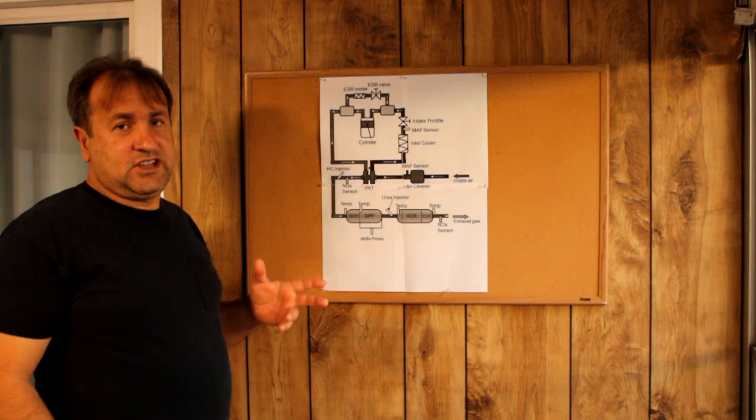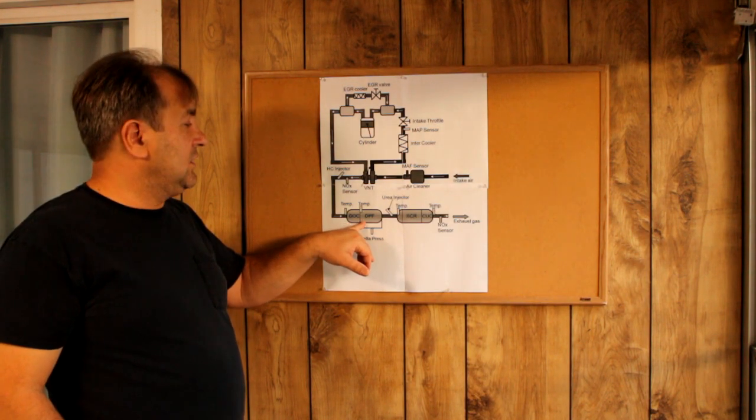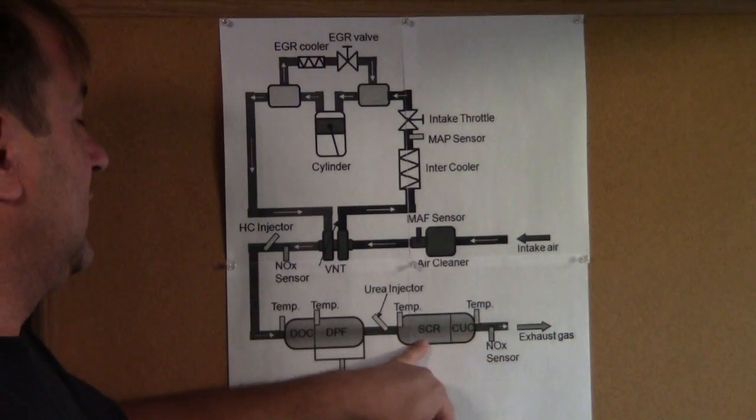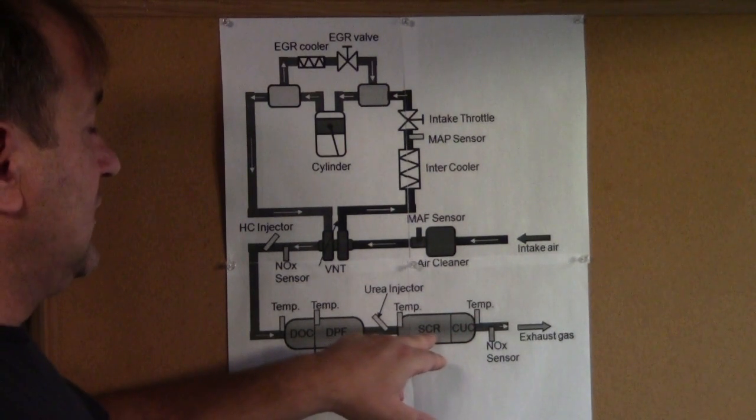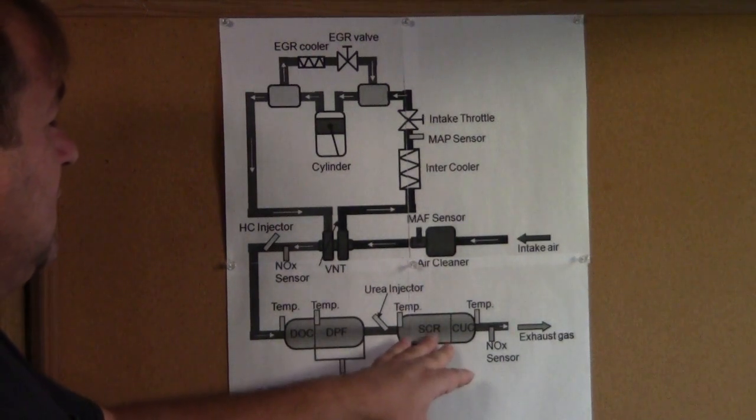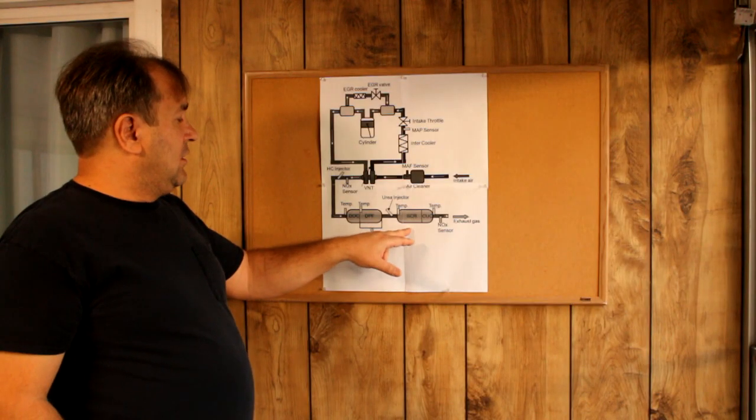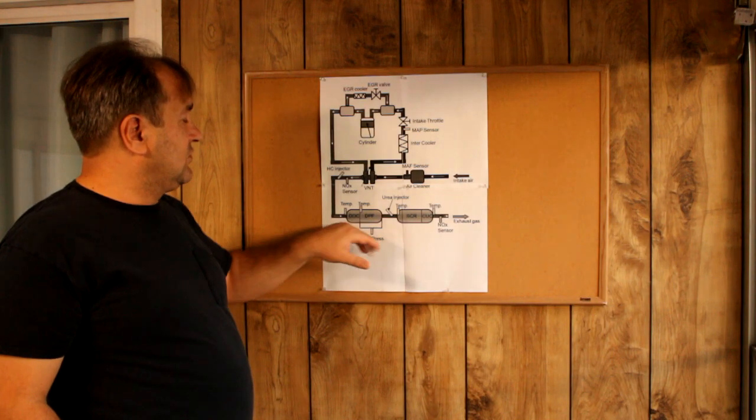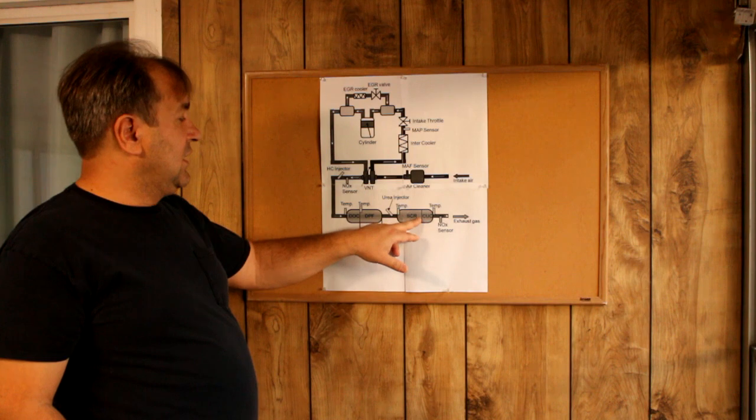They did a third step. After 2010, they added one more thing - it's like a catalytic converter, but this is SCR. They implemented SCR to reduce NOx, because they already reduced soot with the DPF filter. Now they're trying to reduce NOx with this system.